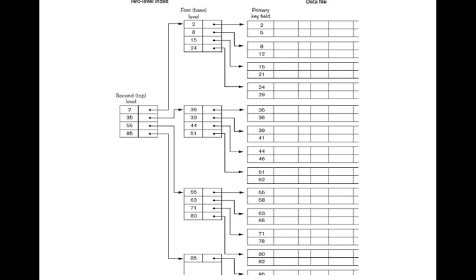IBM systems use ISAM — Indexed Sequential File Organization — which uses this kind of multi-level indexing. For example, to find value 57, I search the top-level index, find it is between 55 and 85, go to that pointer, perform binary search there, and get the actual data file. This is much easier than binary searching the entire index file.